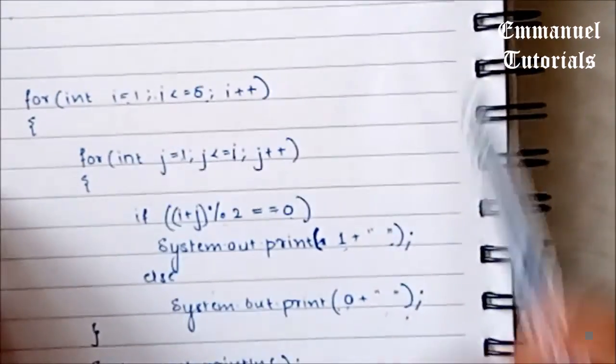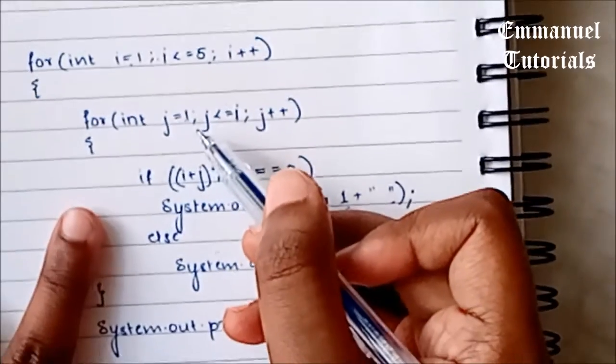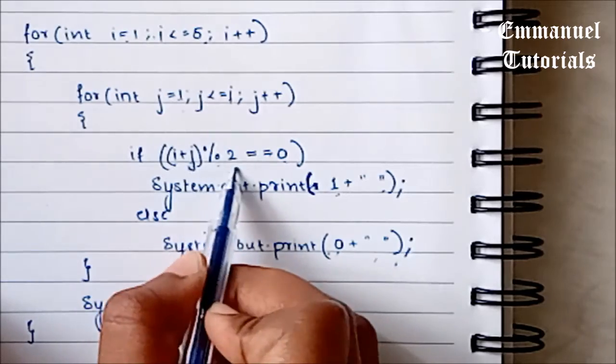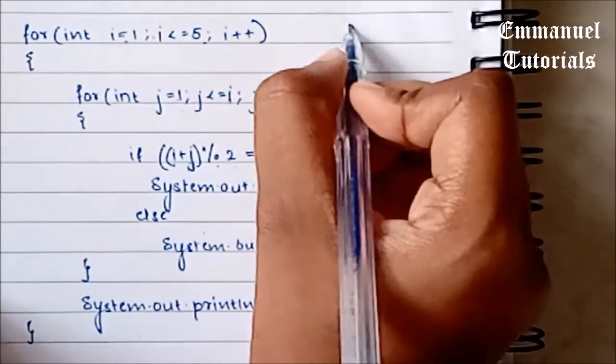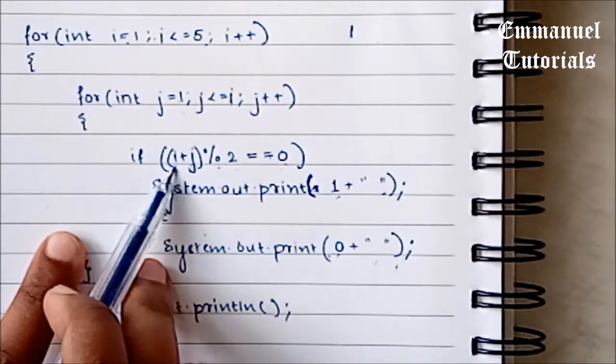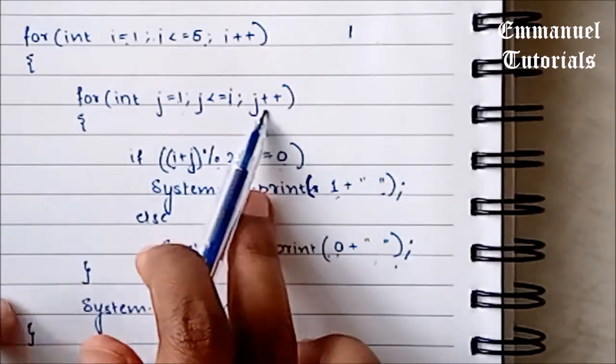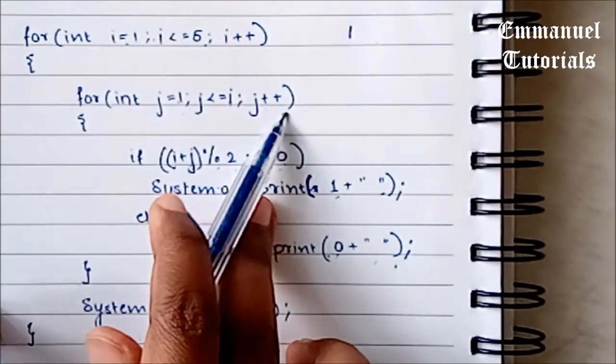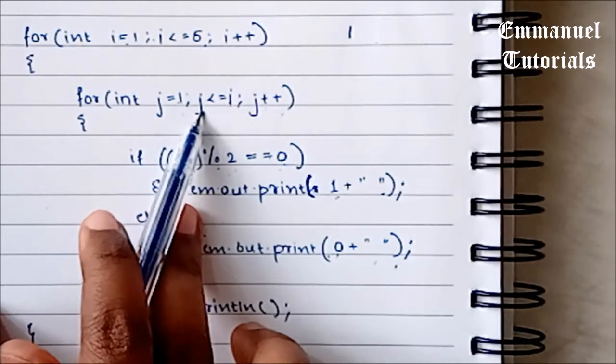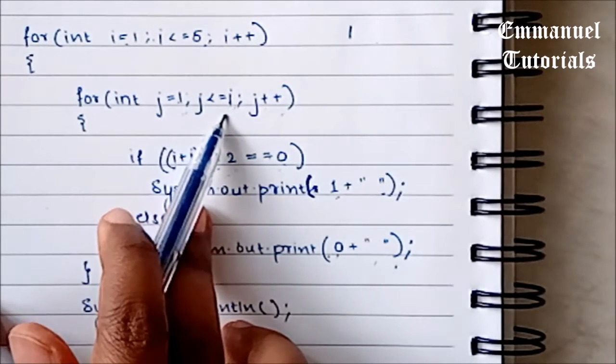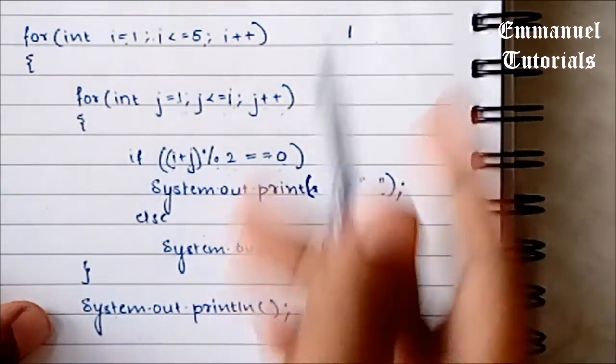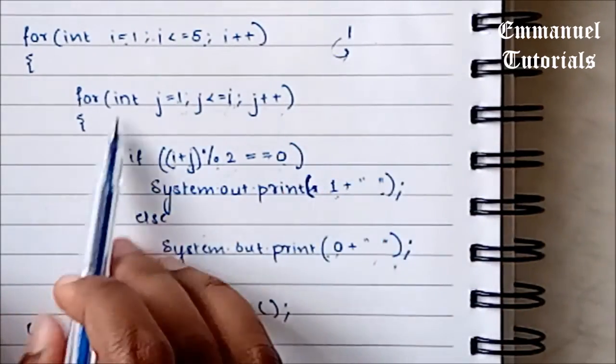Initially, the value of i that we have is 1. It comes inside. J is also 1. We add i plus j. So 1 plus 1 is 2, 2 modulus 2 is 0. It is printing 1 and then it will print a space. Since the if condition is true, it won't go to the else part. Again, it will go back to the loop, increment the value of j, which now becomes 2. It will check for the condition. I is 1, j is 2. 2 is not lesser than equal to 1, so the condition becomes false. It's coming out of the inner loop, printing a new line and going back to the outer loop.